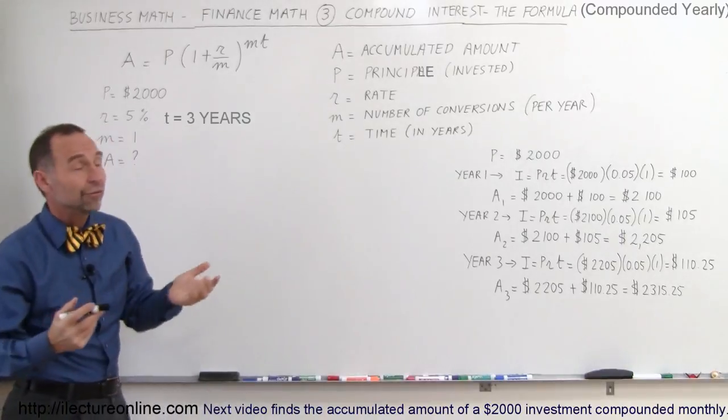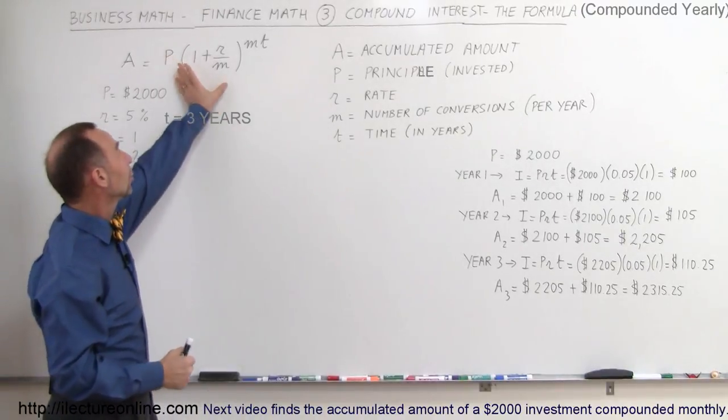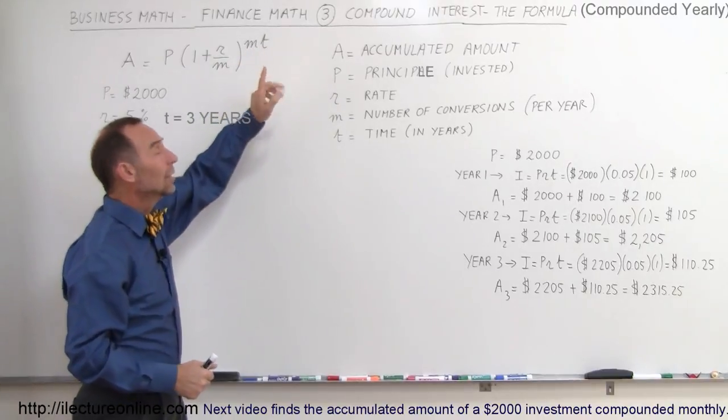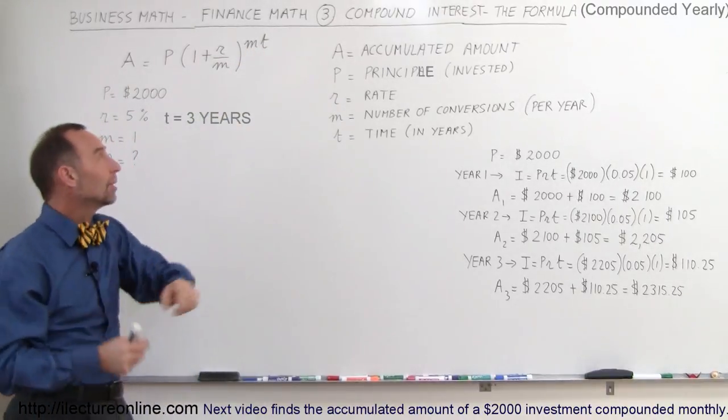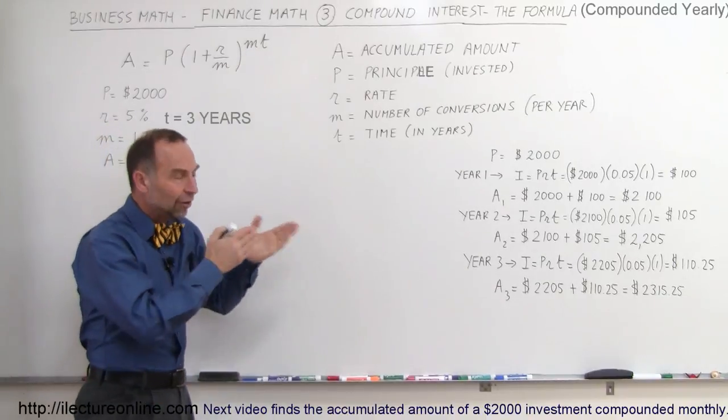M would be 12. If you compounded weekly, M would be 52. And then you raise that quantity to the M times T, where T is the number of years you have the money invested, and M is the number of conversions. So in this fairly simple case,